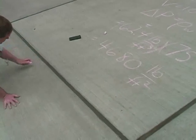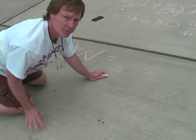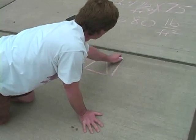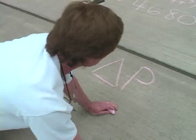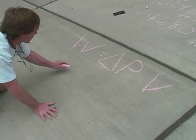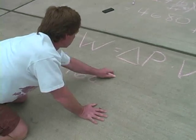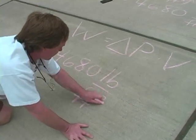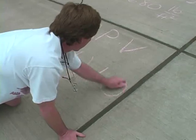Now, the work is equal to the pressure difference times the volume displaced. In every system of units, work is a force or force-like quantity times a displacement or displacement-like quantity. In this case, pressure difference is the force-like quantity and volume is the displacement. We have 4,680 pounds per square foot times a displacement of 1,000 cubic feet.